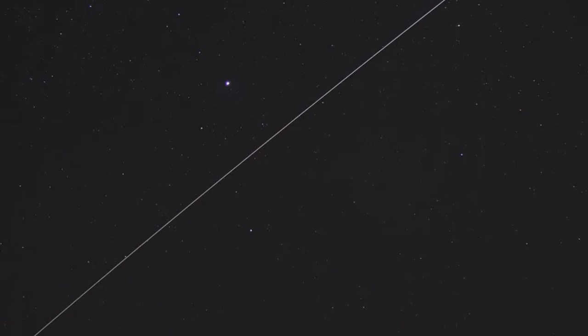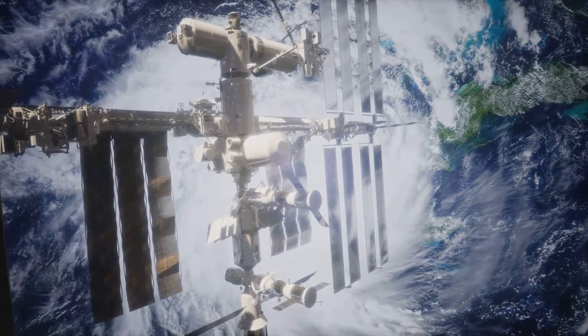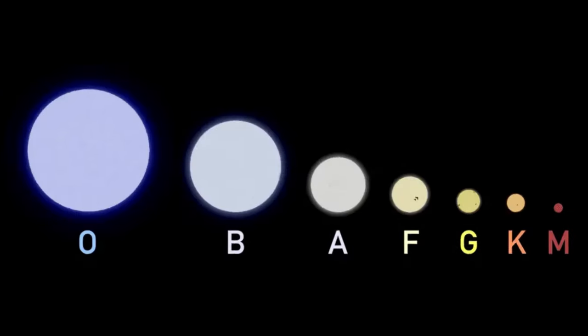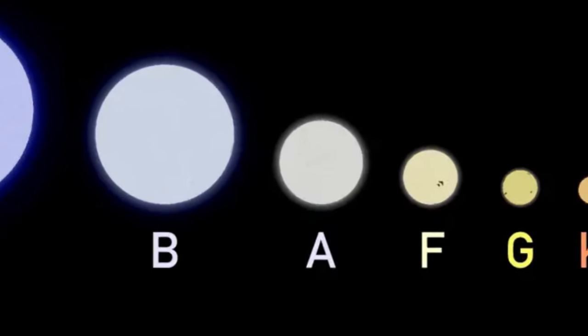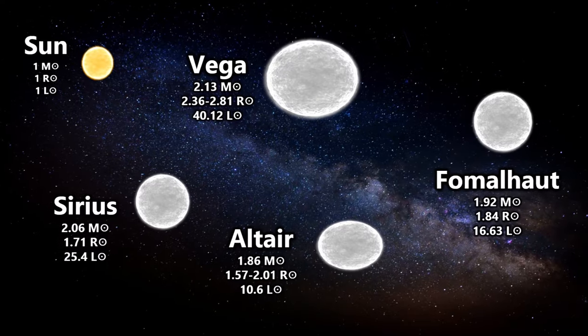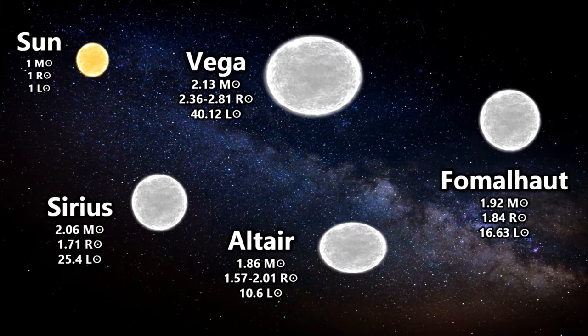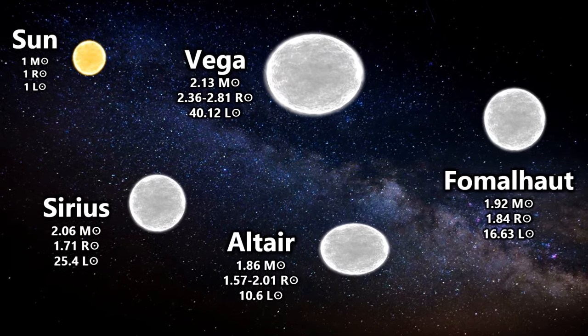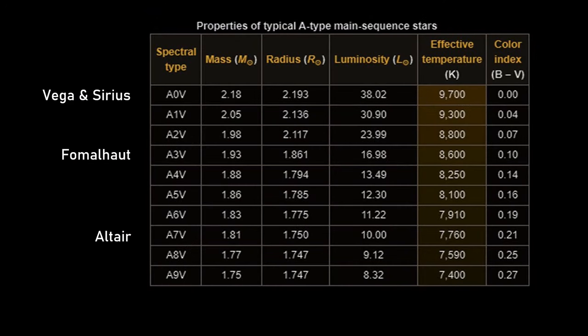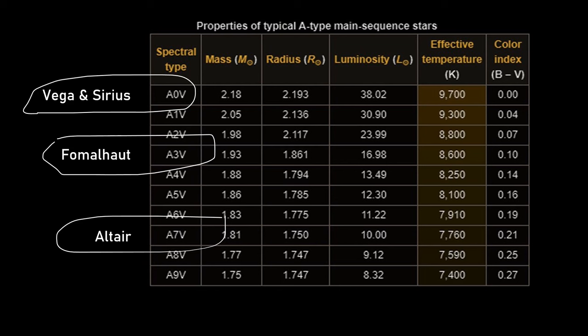So we know that Altair is a Type A main sequence star, and I like to think that there is a prominent quartet of this type of star in the sky: Altair alongside Vega, Sirius, and the Eye of Sauron star of Fomalhaut. Here we see the four stars together, with their approximate sizes relative to the Sun. With a stellar classification of A7 main sequence, Altair however is on the smaller side of the A type. Vega A0, Sirius A0, and Fomalhaut A3 are all intrinsically brighter stars.